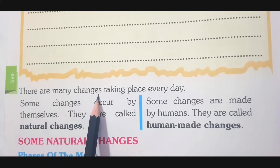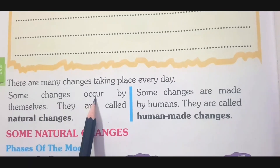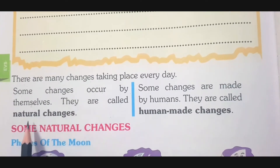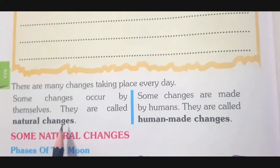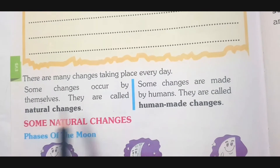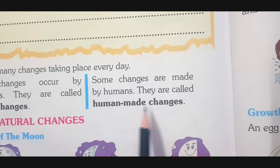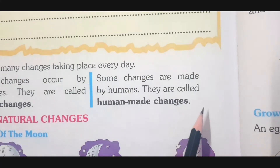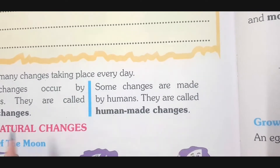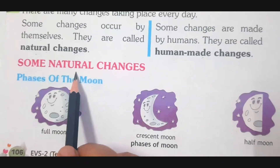There are many changes taking place every day. Some changes occur by themselves — they are called natural changes. The changes that occur by themselves, occurring naturally, are called natural changes. Some changes are made by humans — they are called human-made changes. There are two types of changes, like we learned in the last lesson with human-made things and natural things. Here we have natural changes and human-made changes. First, we are going to read about some natural changes.